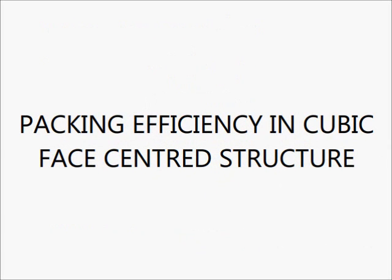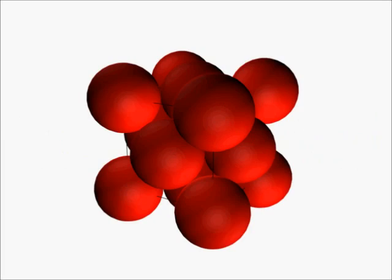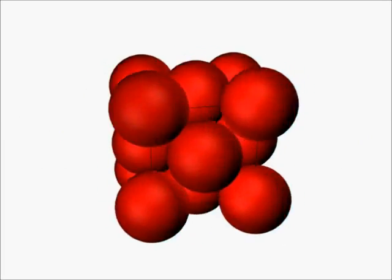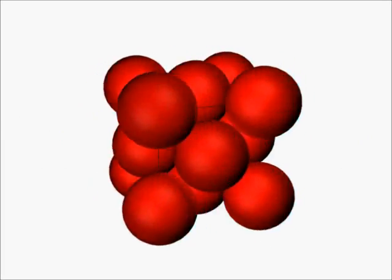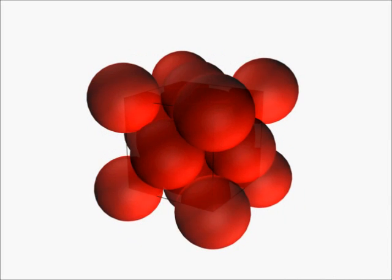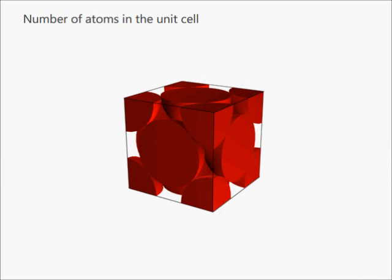Packing Efficiency in Cubic Face-Centered Structure: In the unit cell there are 8 corner atoms and 6 face-centered atoms. The 8 corner atoms contribute 1/8th of their volume and the 6 face-centered atoms contribute half of their volume to the unit cell. So the number of atoms in the unit cell is equal to 8 × (1/8) + 6 × (1/2), which equals 4 atoms.